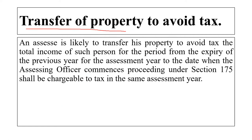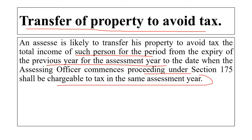The third case is transfer of property to avoid tax. If an assessee is likely to transfer his property to avoid tax, the total income for the period from the expiry of the previous year to the date when the Assessing Officer commences proceedings under Section 175 shall be chargeable to tax in the same assessment year. Sometimes assessees transfer property to avoid tax, but the government has a rule that you cannot transfer property unless you pay the tax on the income first. In this case, the previous year becomes the assessment year.